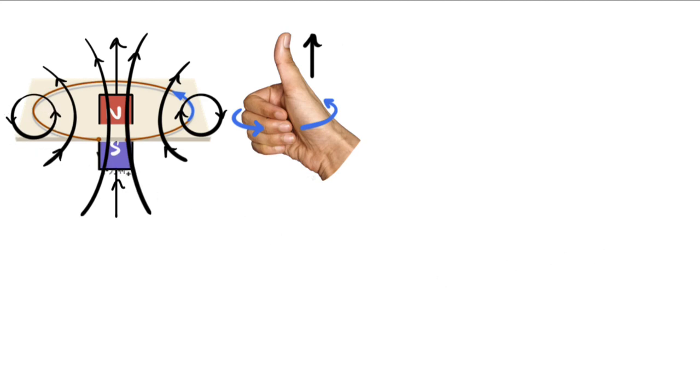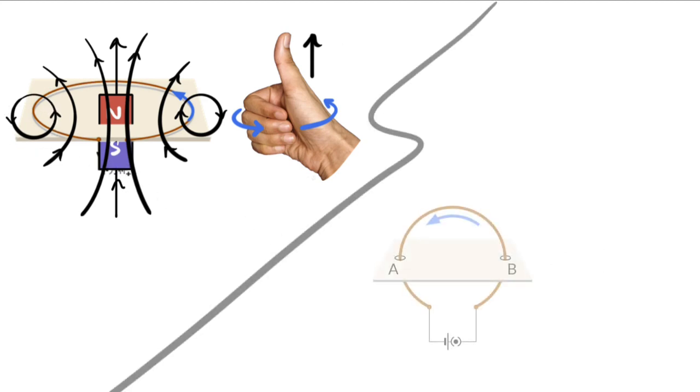Alright, let's try one more. Why don't you pause the video and think about how the magnetic field looks like again at the center, and if you can imagine a tiny bar magnet, where would the north pole be pointing? Why don't you pause and try? Alright.